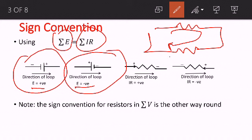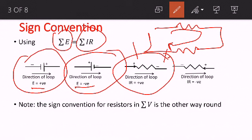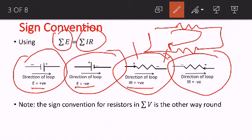Coming to resistors: when current is entering the resistor, that point where it enters is positively charged, and the point where it is leaving the resistor is negatively charged. So in this case, if the direction of the loop is in the direction of the current, then your IR will be positive. If the direction of the loop is in the opposite direction of the current, IR will be negative. Please note that this is the sign convention when using summation of E equal to summation of IR.